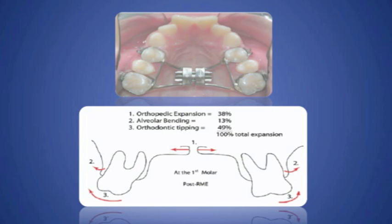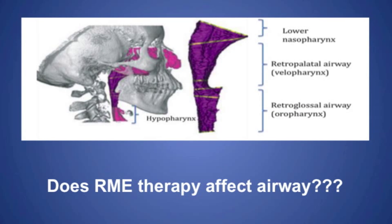Rapid maxillary expansion, RME, is commonly used in orthodontics to correct maxillary transverse deficiency. By nature, RME produces orthopedic expansion, alveolar bending, and orthodontic tipping. In recent years, orthodontists are becoming more interested in knowing the orthopedic effect of RME on surrounding tissues, including the airway.